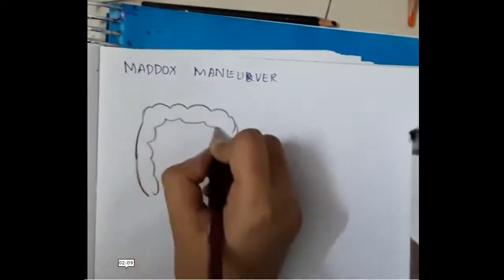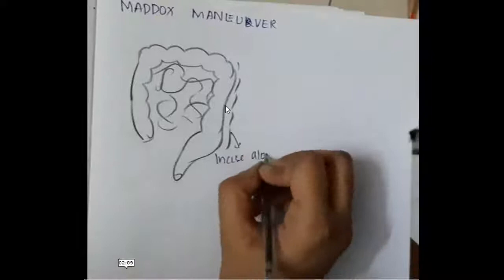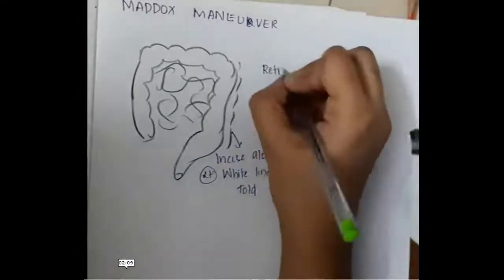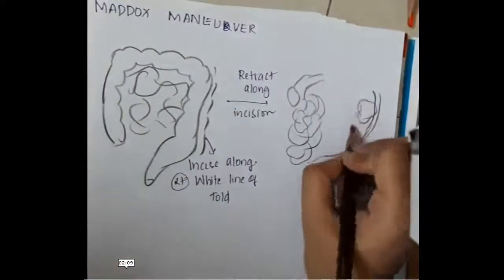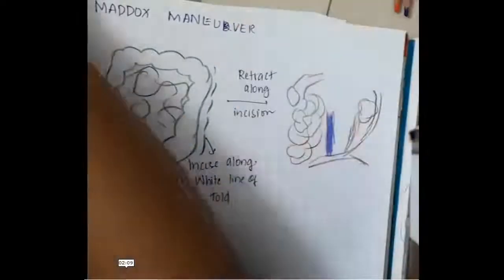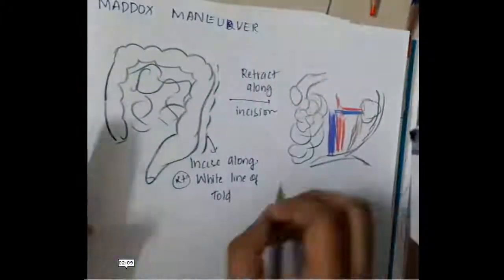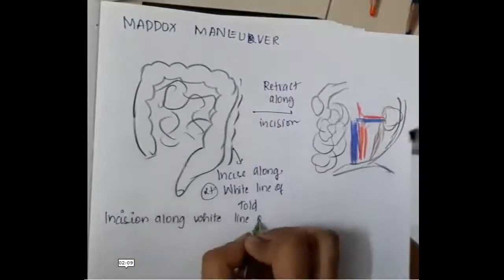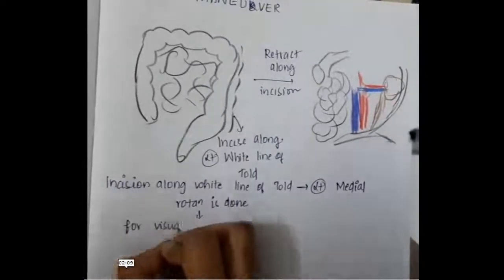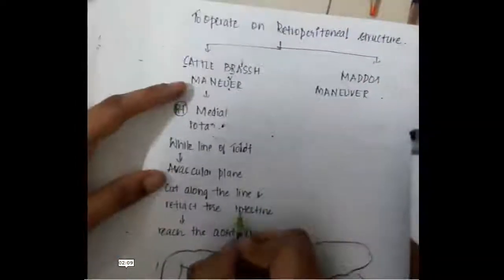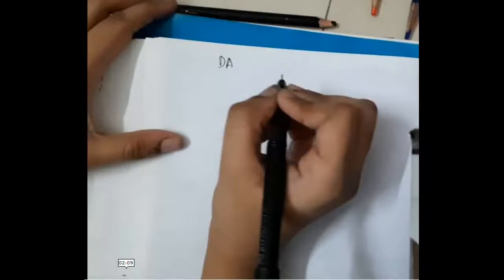The Mattox manoeuvre involves incising along the left white line of Toldt, then retracting structures to visualize the left kidney and aorta. Left medial rotation is done in the Mattox manoeuvre for visualization of the aorta and left kidney. The inferior vena cava is rarely seen with this manoeuvre. These are the important points about retroperitoneal hematoma.